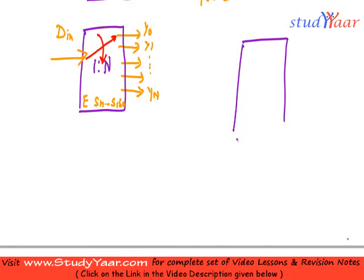1 is to 4. So, how many data outputs? 4 data outputs. How many selector inputs? 2 selector inputs. S1 and S0.